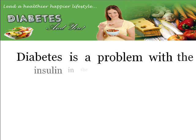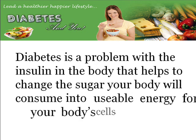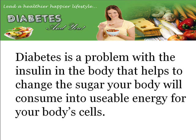Diabetes is primarily a problem with the insulin in the body that normally helps to change the sugar that you consume into usable energy for your body's cells. Each of these three forms of diabetes presents a different problem associated with how the body uses or produces insulin.